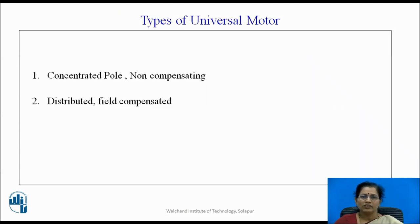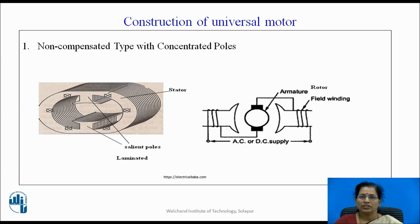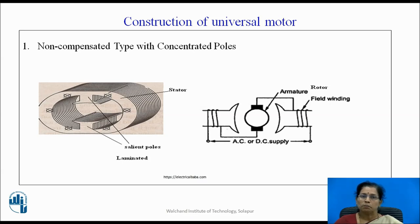There are two types of universal motor according to construction: concentrated pole non-compensating, and distributed field compensated type. In the first type, the non-compensated type with concentrated poles, salient poles are provided and a laminated pole is used to reduce eddy current losses, because these motors are used for AC or DC both. When we use AC, it creates heat due to eddy current losses, and generally, to reduce eddy current losses, laminated parts are used.